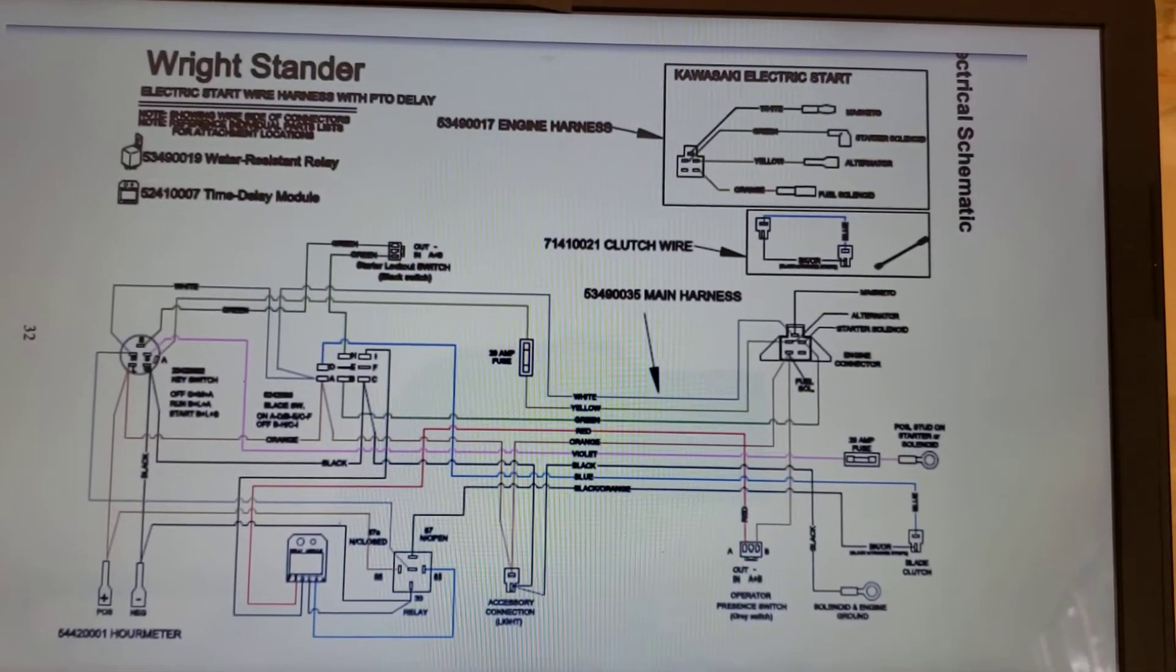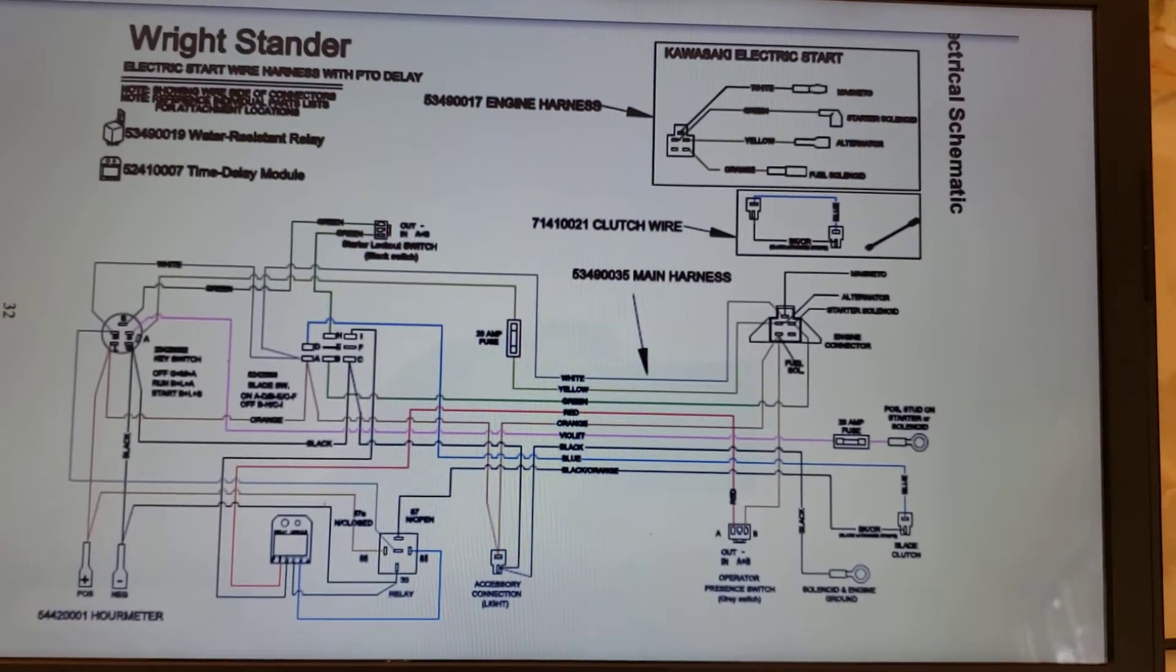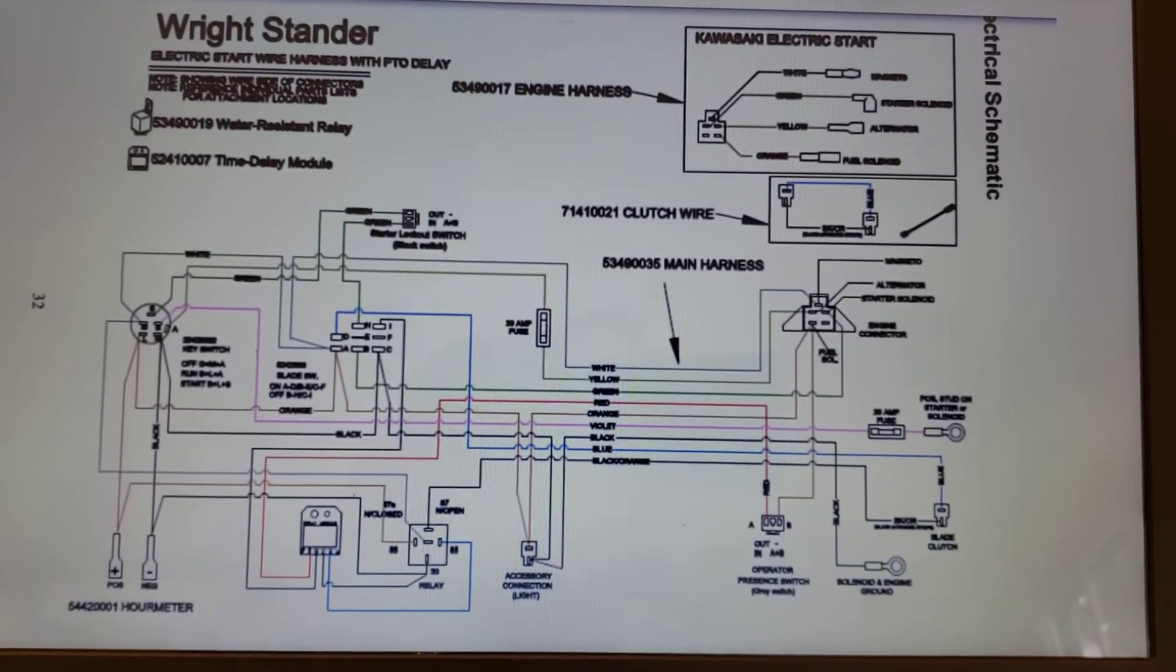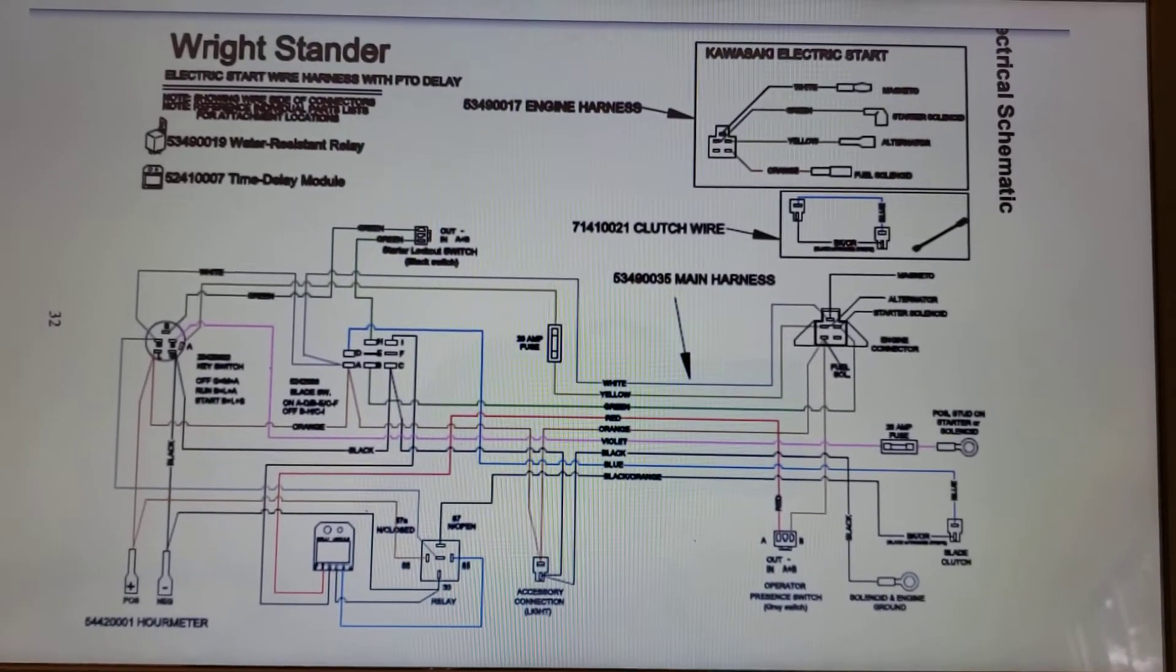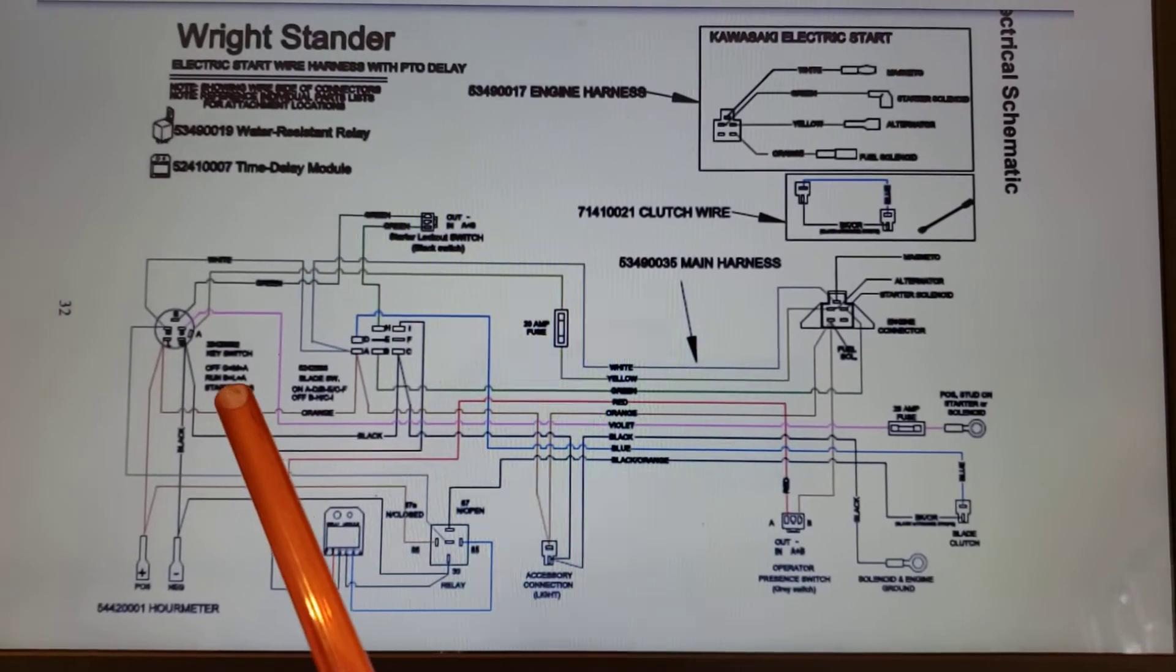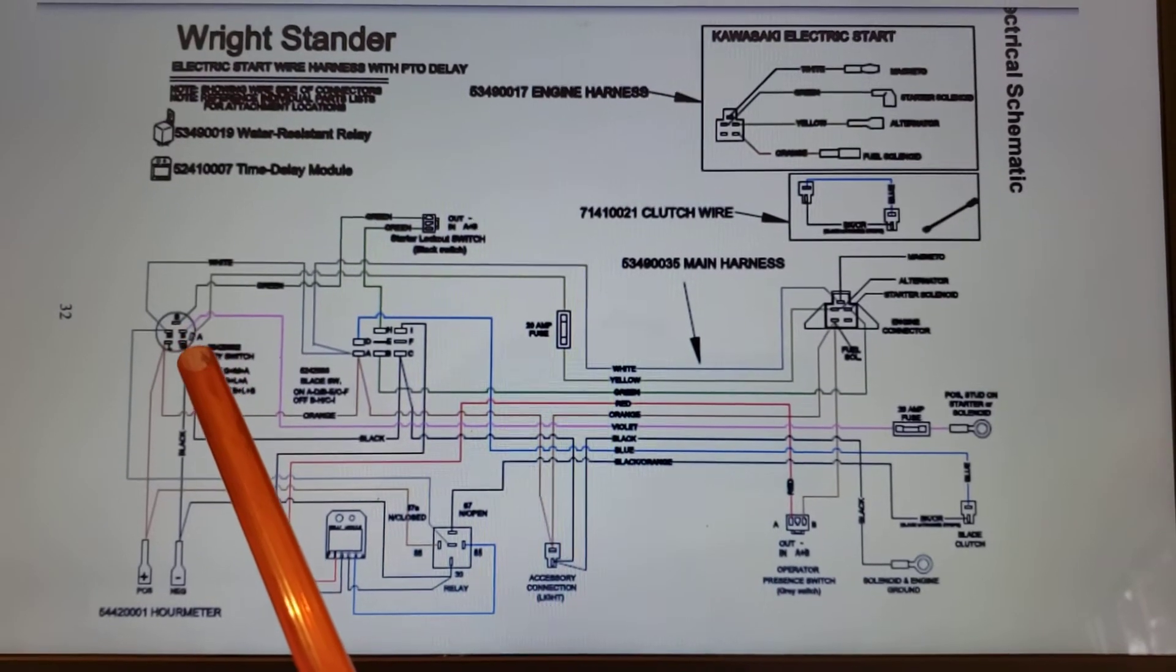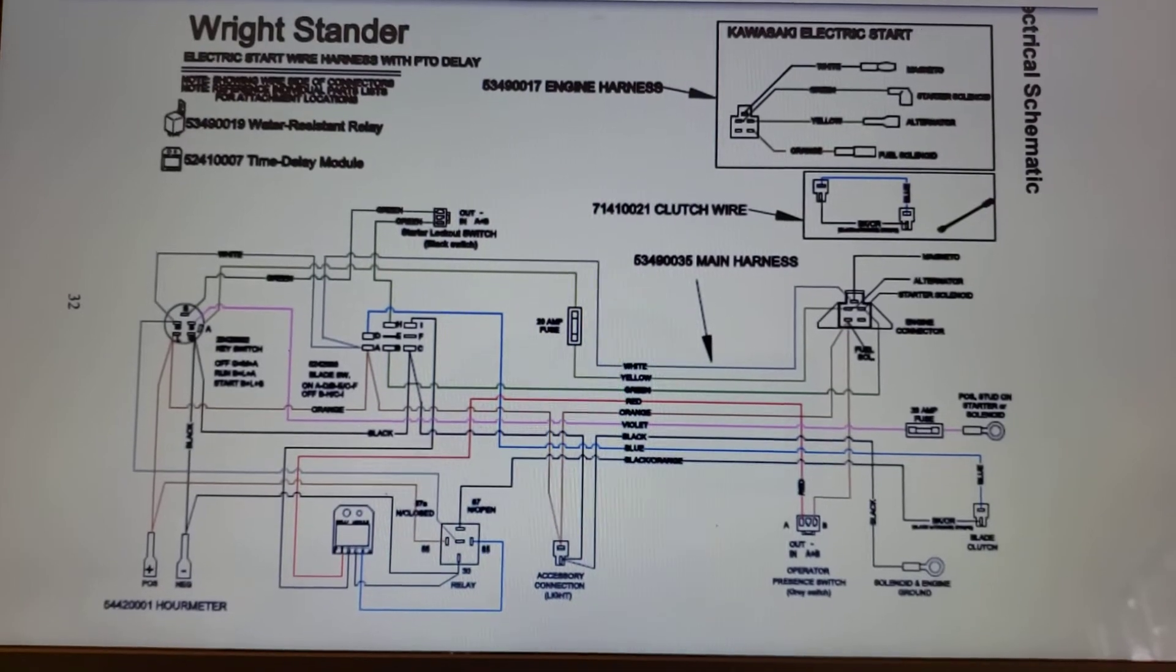This video has information regarding the Wright Stander 48-inch mower. This mower has a Kawasaki engine in it, or did have one. So let's review what the schematic is showing us here. Over here on the left side we've got a key switch which can be turned into the off, run, and start mode.